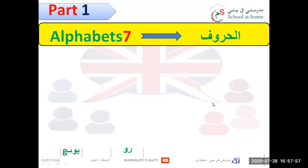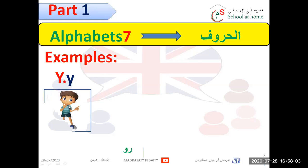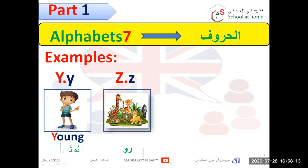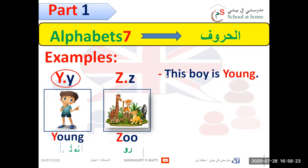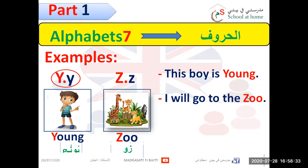We go to the examples. We have just two examples. Y like young — young. And Z, last one, like zoo — zoo. Hadiqat al-haywanat. Y is sometimes a vowel: 'This boy is young.' I will go to the zoo — sa-adhabu ila hadiqat al-haywanat.